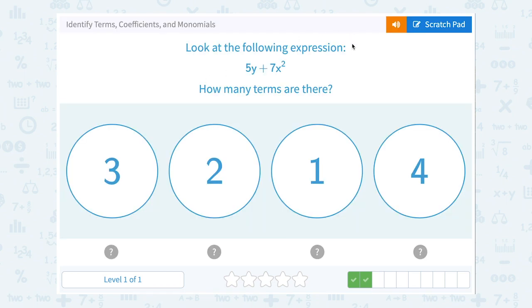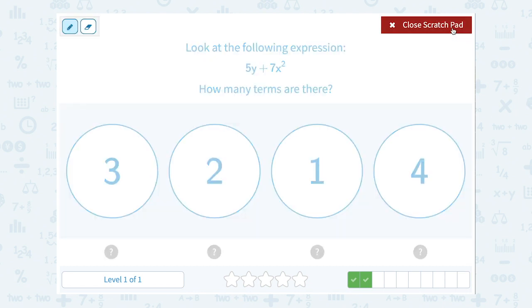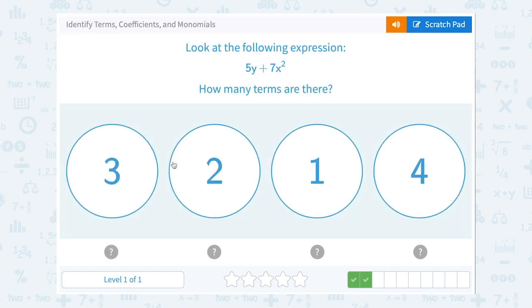Look at the following expression, 5y plus 7x squared. How many terms are there? Well, when you're trying to count how many terms, the terms are separated by plus or minus. So I have one plus sign here, so it's separating it into two terms. Right, one of my terms is 5y, the other one is 7x squared. So two terms.